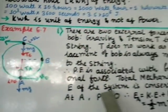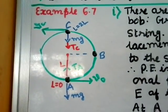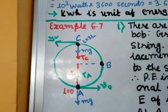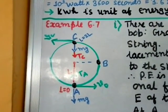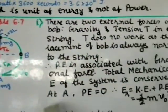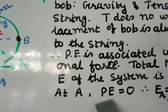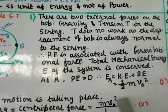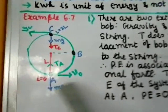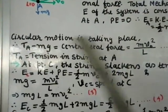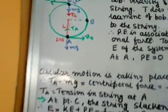At point A (lowest point), potential energy equals zero, so total mechanical energy E_A equals kinetic energy: E_A = ½mv₀² — equation (1). Since circular motion is taking place at A, T_A minus mg equals the centripetal force, giving T_A - mg = mv₀²/L — equation (2), where T_A is tension at A.